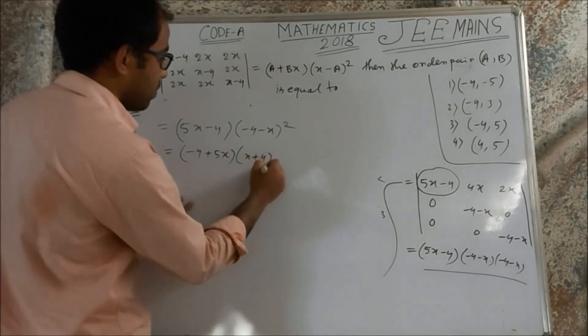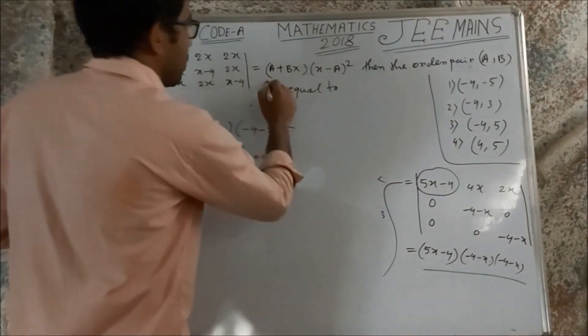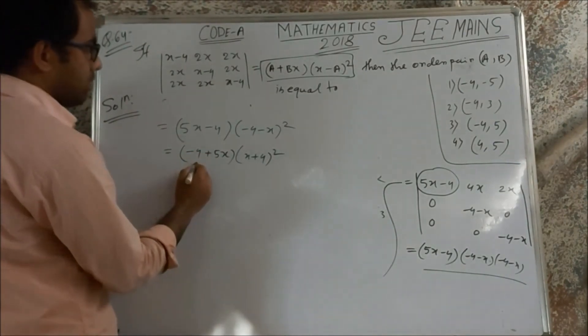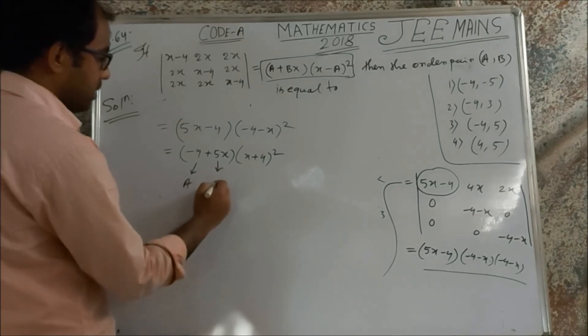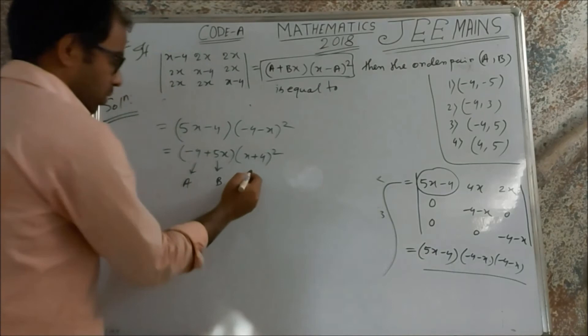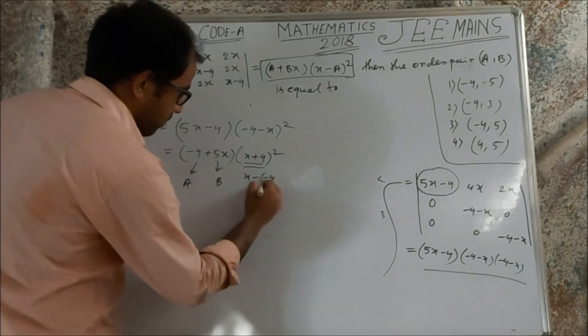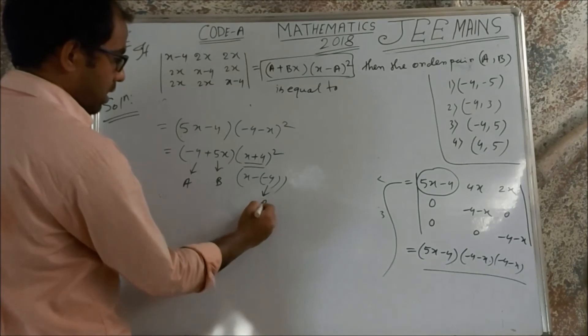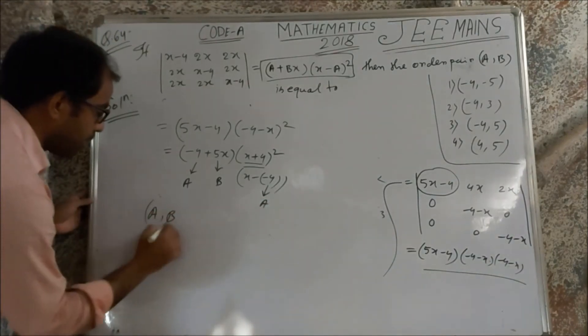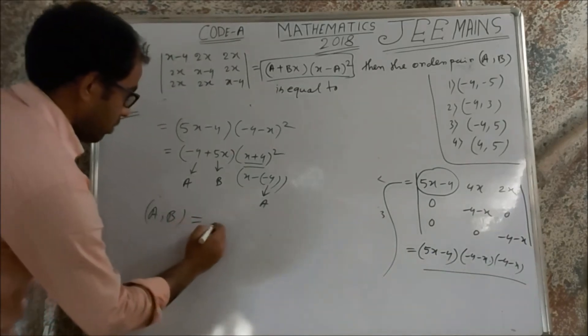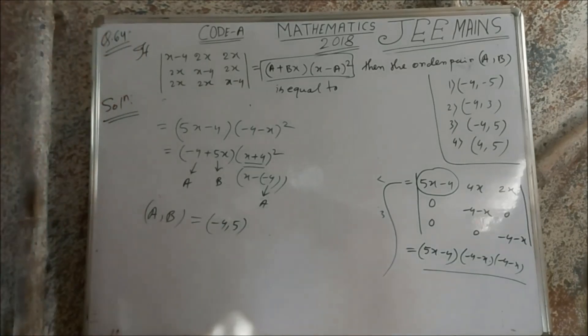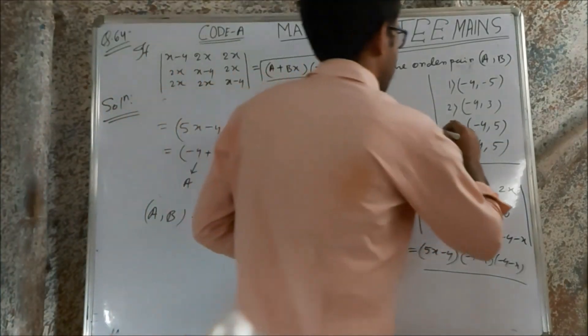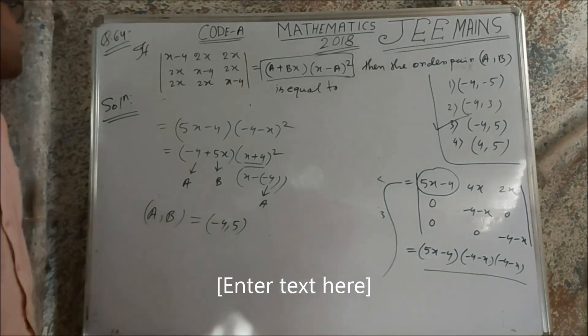x plus 4, which is compared to the right-hand side of the equation, and the polynomial. So comparing this, we get this is A and this is B. So we get the pair of A is equal to minus 4 of 5. So this is the answer. Now check which is the correct minus 4 of 5. That means it is the right answer.